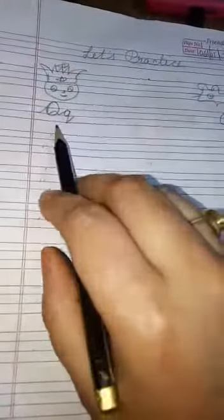We will write here HW homework. Students, today we are going to do Q for Queen and R for Rat, joining letter Q and R. This is Queen, this is Rat. Okay, so let us start our work.